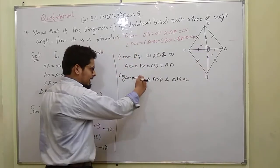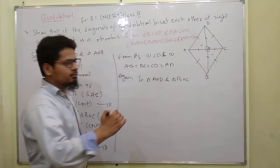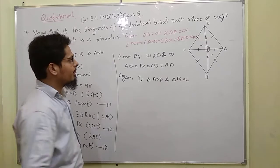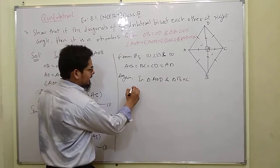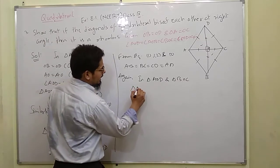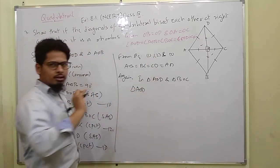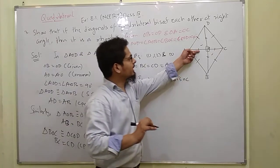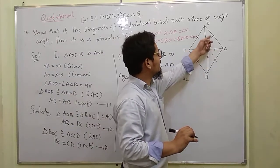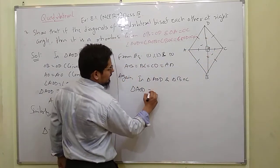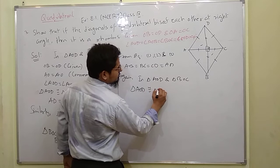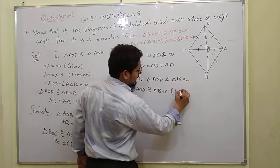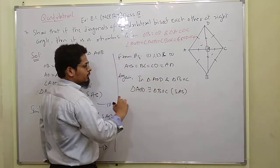I am not doing this part — you try it. I am only writing here because it is a very simple congruency. This side is equal to this one, and this side is equal to this one, and it is side-angle-side.